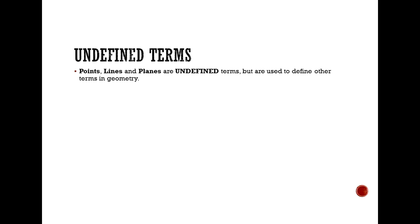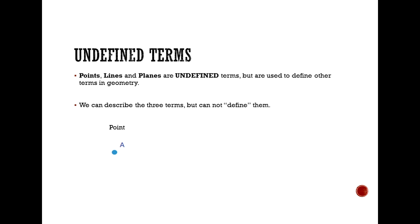Points, lines, and planes are undefined terms, but are used to define other terms in geometry. We can describe the three terms, but we cannot define them.